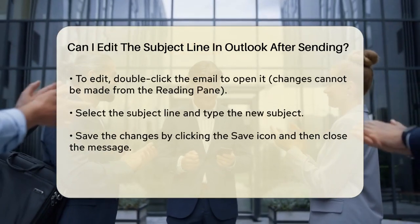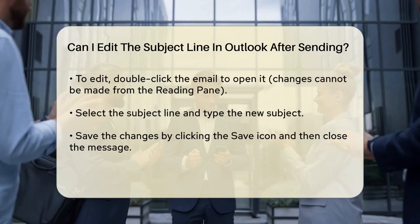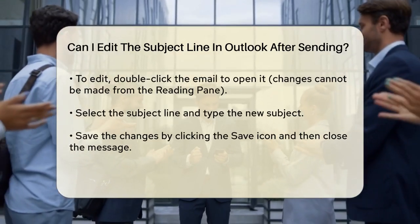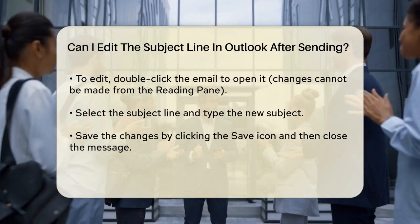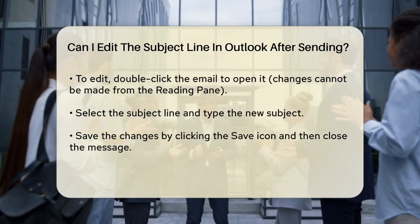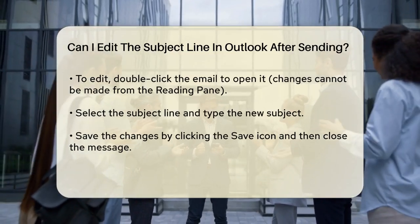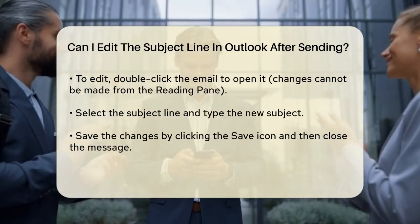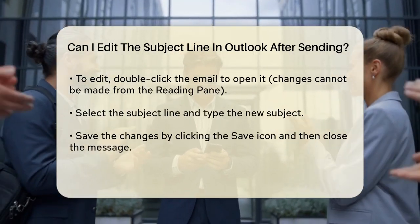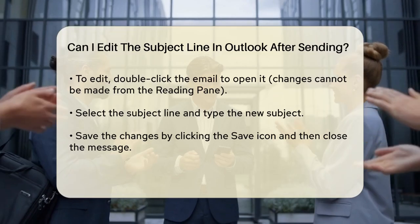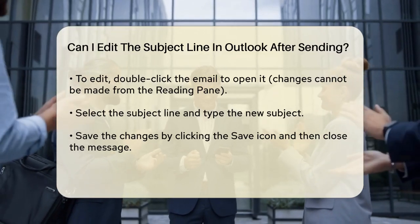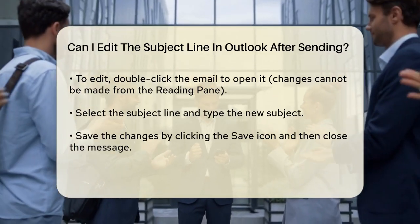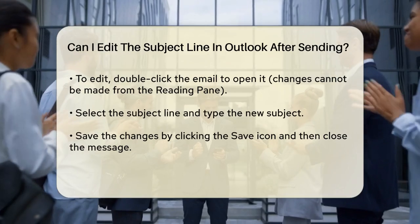Here's how you do it. Double-click the email to open it — you can't make changes from the reading pane. Select the subject line by clicking inside it; you'll see a blinking cursor. Type your new subject, then click the Save icon in the top left corner of the message window and close the message.